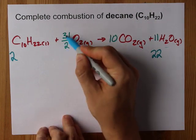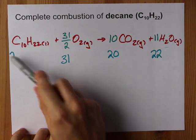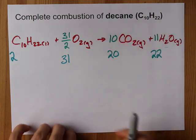And this 31 over 2, when you double it, just gives you back the 31. So you'd need 2, 31, 20, and 22 as your coefficients if you're not allowed to use fractions.